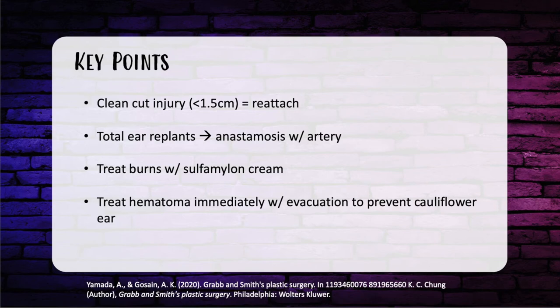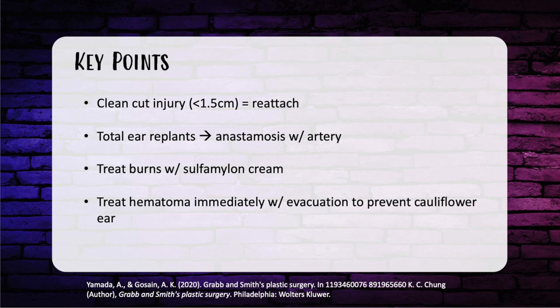Burn wounds to the ear should be treated with sulfamylon — mephanide acetate — as a cream application with a non-compressive dressing. A mnemonic: MA for metabolic acidosis is the testable side effect of mephanide acetate. Use sulfamylon because the ear is cartilage. For ear hematoma, treat immediately with hematoma evacuation and a compressive bolster dressing to prevent cauliflower ear, which forms from a subperichondrial hematoma surrounding devascularized cartilage, resulting in fibrosis.